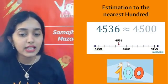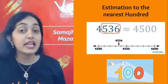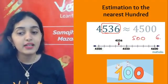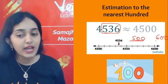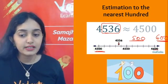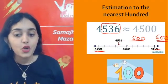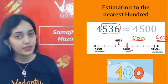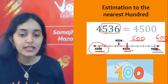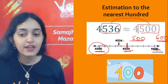Next is estimation to nearest 100. For example, 536 lies between 500 and 600. Is 536 closer to 500 or 600? Looking at the number line, the midpoint is 550. Since 536 is less than 550, it is closer to 500. Therefore, 536 will be rounded off to 500.